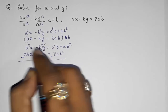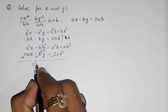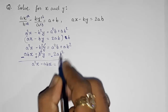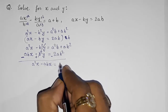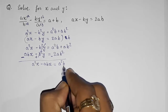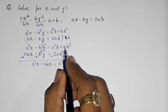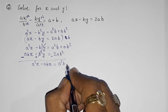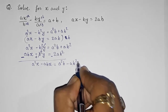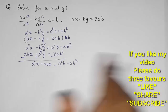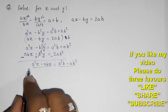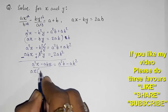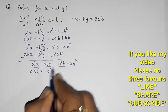The b²y terms cancel. We get a²x minus abx on the left. On the right, a²b remains but we have ab² minus 2ab², giving minus ab². Taking a·x common on the left gives x(a minus b), and on the right ab(a minus b) factored out.